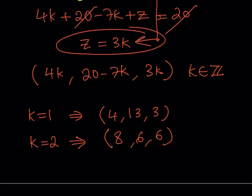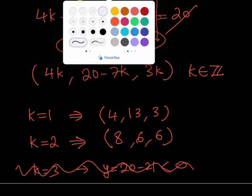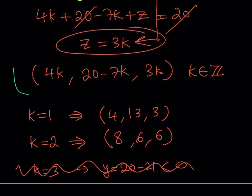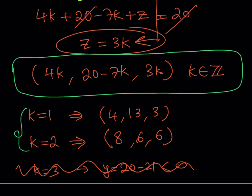Now if you replace k with 3, you'll notice that the y value is going to be 20 - 21, which is less than 0, and you don't want that because you're looking for positive integer solutions. But as I said earlier, this gives you all the solutions. This is a general solution method or general solution, and these are specific solutions where we're looking for positives.